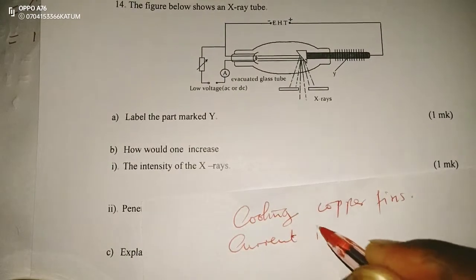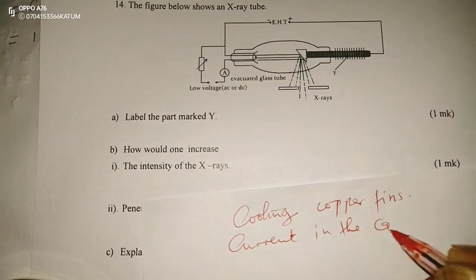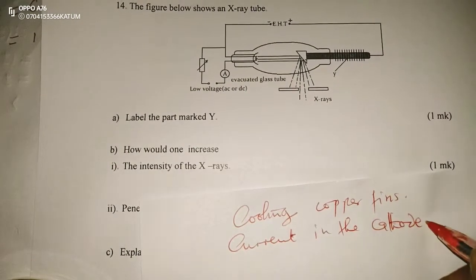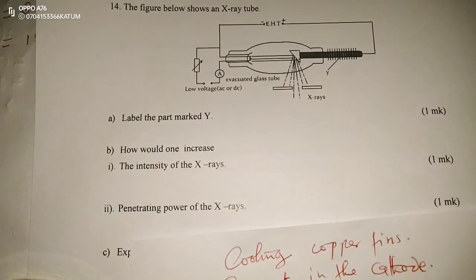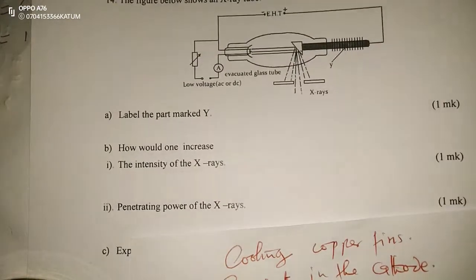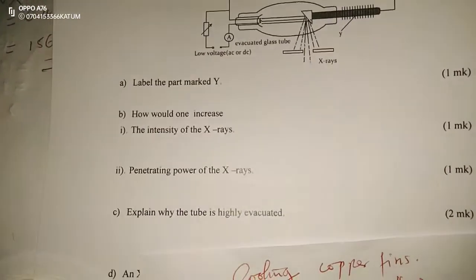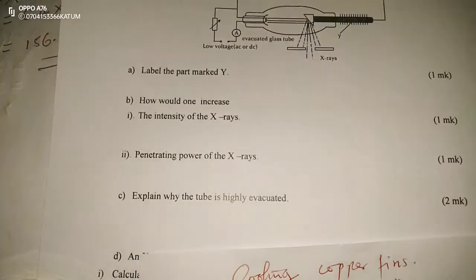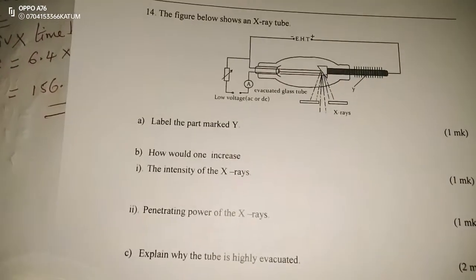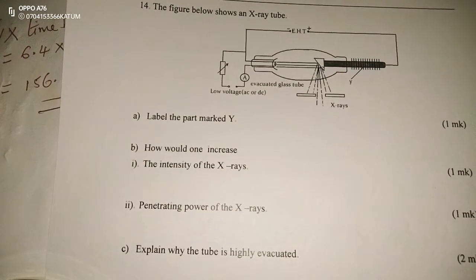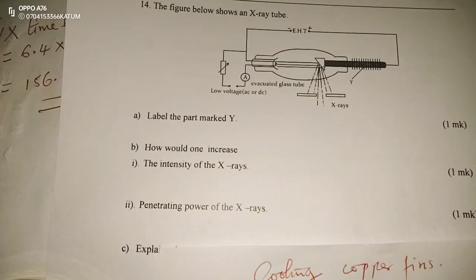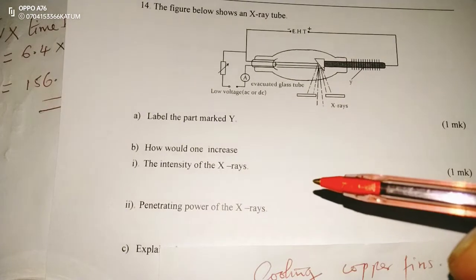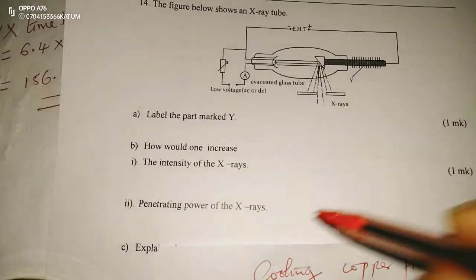When the current in the cathode is increased, we will have a lot of heating effect taking place and thermionic emission will be high. Therefore, a lot of electrons will get emitted from the cathode and X-rays will be produced in a large number.